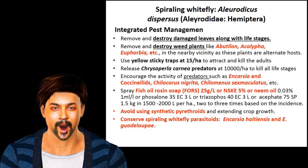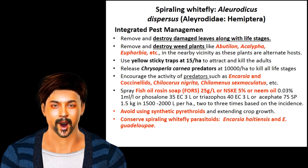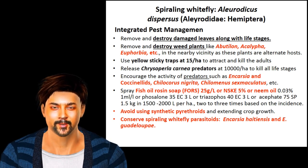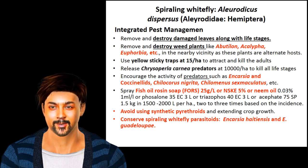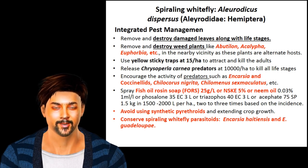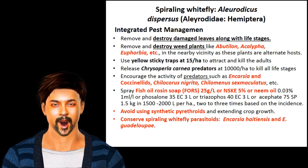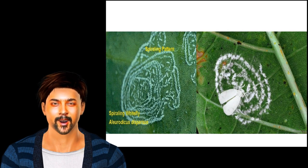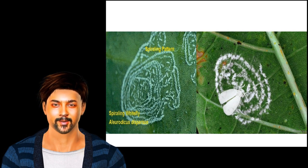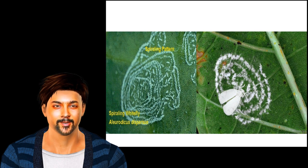The next pest is the spiraling whitefly, Aleurodicus dispersus, family Aleyrodidae, order Hemiptera. For effective management, remove and destroy plant parts with insect life stages. Remove weeds like Abutilon, Acalypha, Euphorbia, etc. around the guava orchard. Use yellow sticky traps at 15 per hectare and release Chrysoperla carnea predator at 10,000 per hectare.